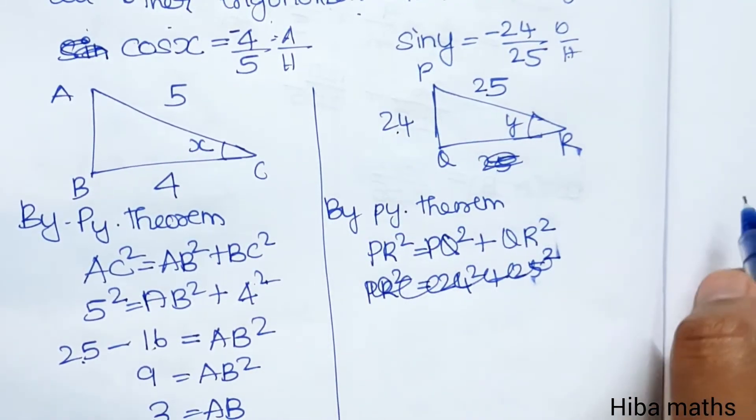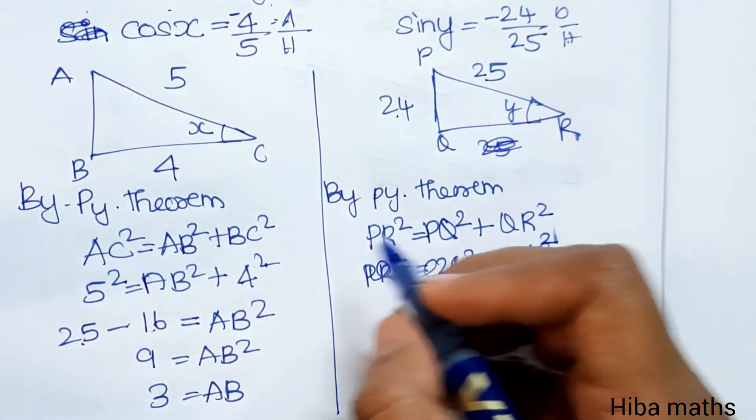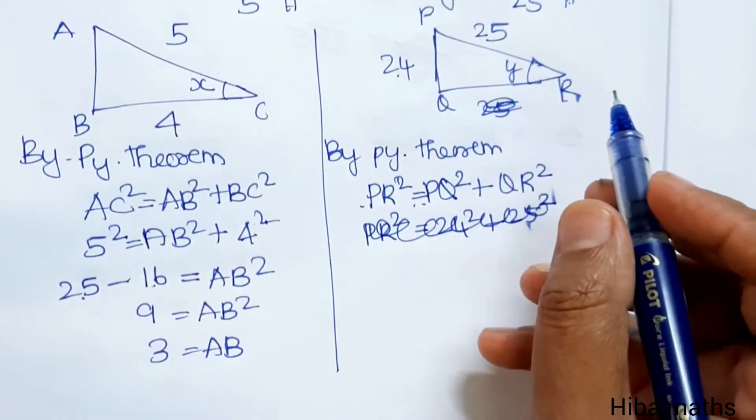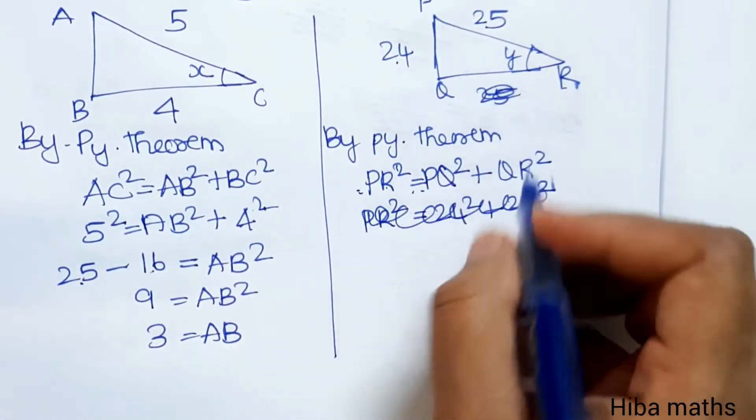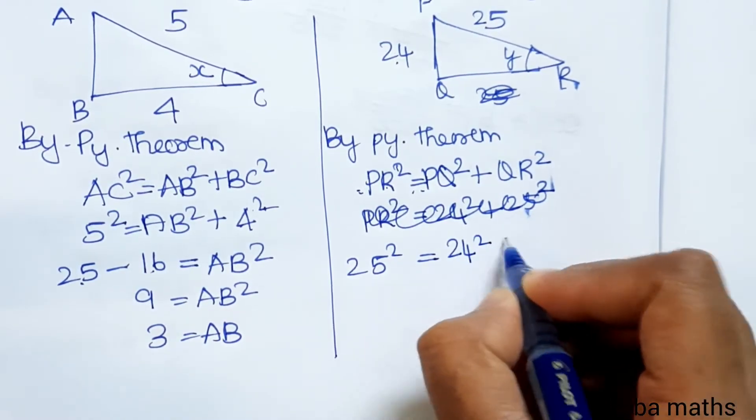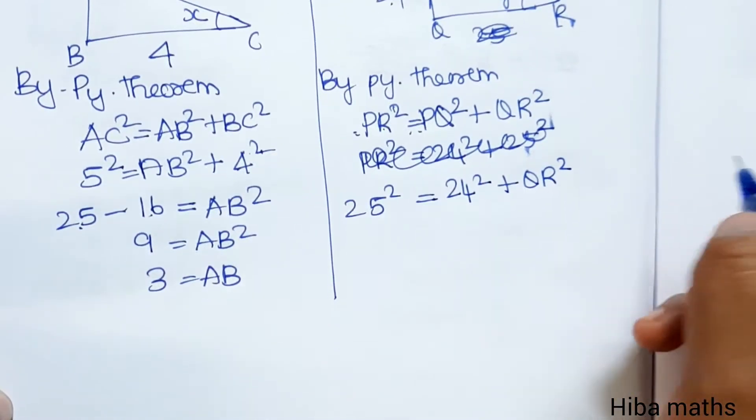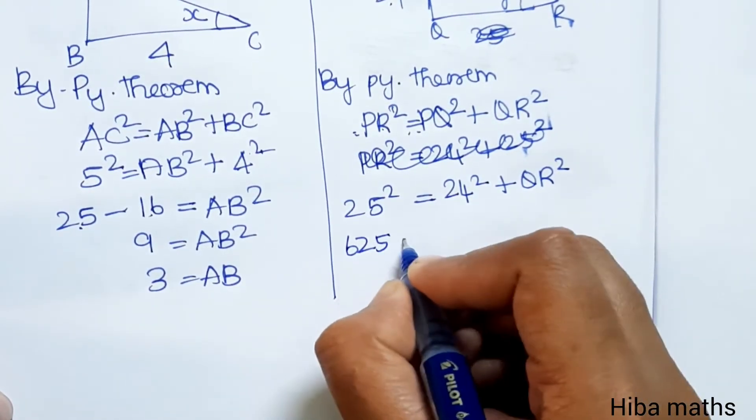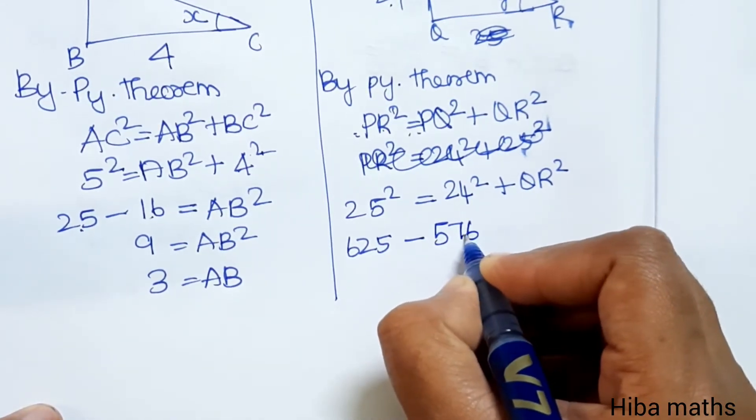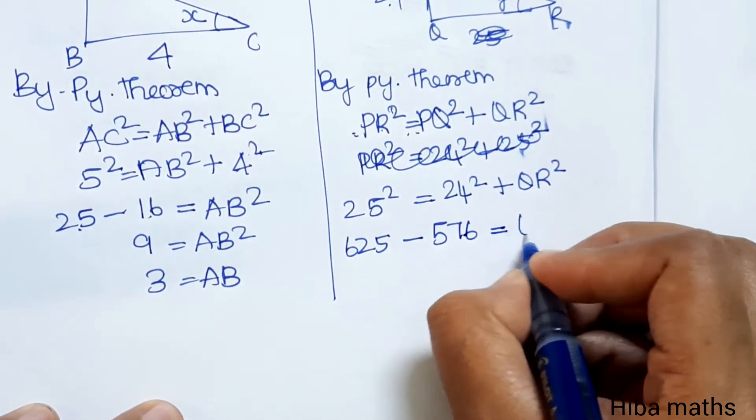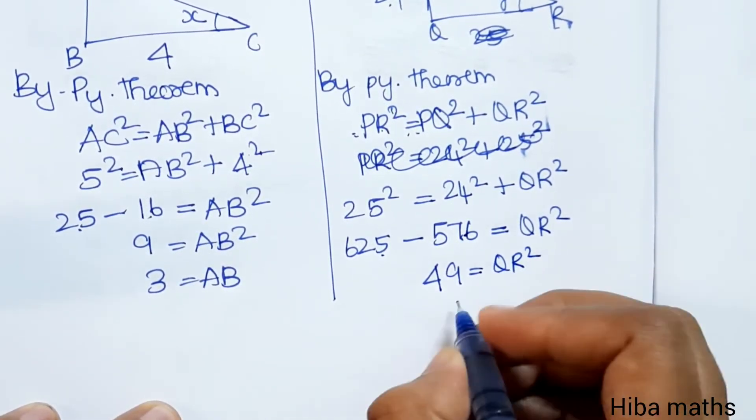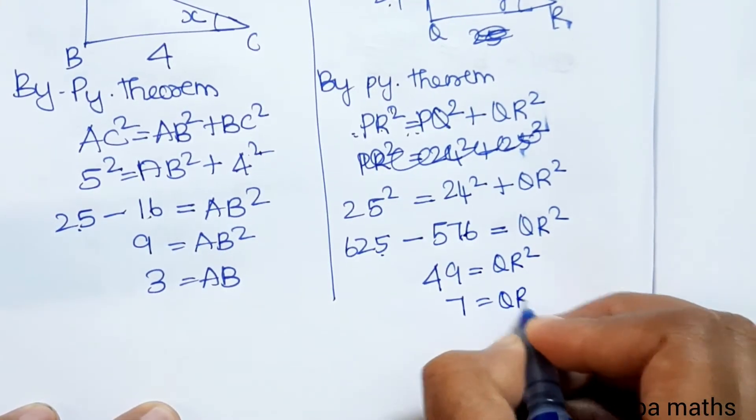For y, opposite is 24. By Pythagorean theorem, hypotenuse square PR² equals PQ² plus QR². PR² is 25² equals PQ² which is 24² plus QR². 25 times 25 is 625 minus 24 times 24 is 576, that equals QR². 49 equals QR², so 7 equals QR.